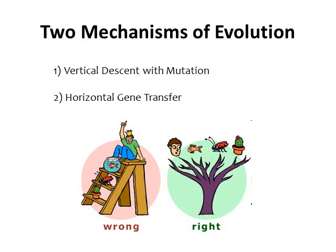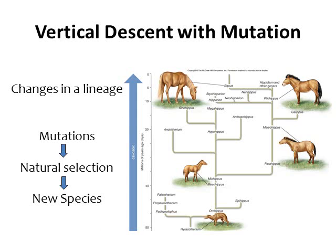There are two mechanisms of evolution we're going to look at. The first one is called vertical descent with mutation, and the second type is called horizontal gene transfer. The first type, vertical descent with mutation, looks at how organisms change over time in a lineage — from the past to the current time.